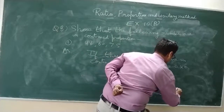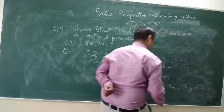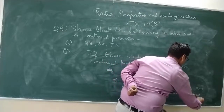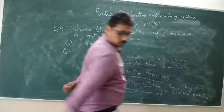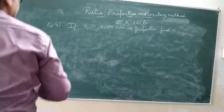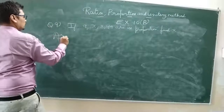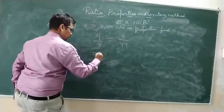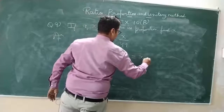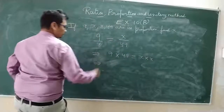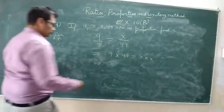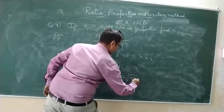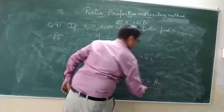If 9, x, x, 49 are in proportion, find the value of x. It can be written as 9 upon x equals x upon 49, so 9 into 49 equals x into x, meaning x squared equals 441. Therefore x equals the square root of 441, which is 21.